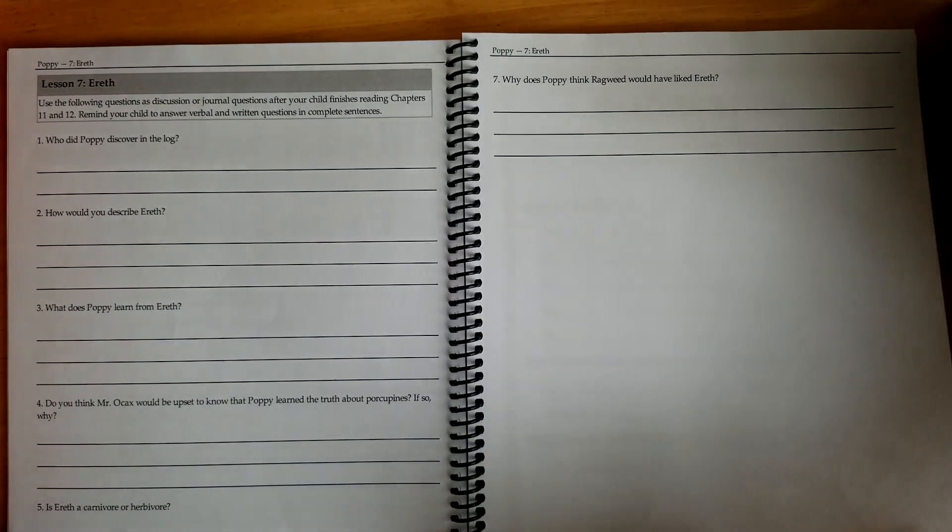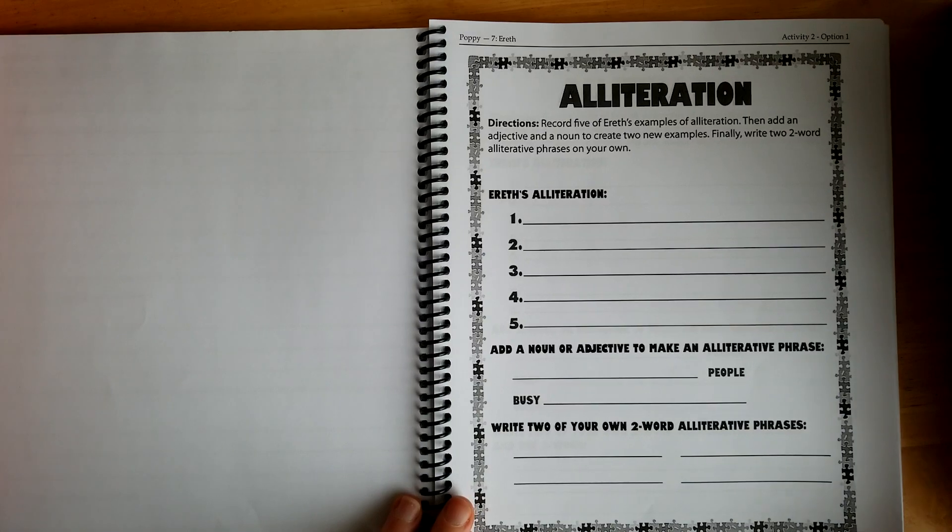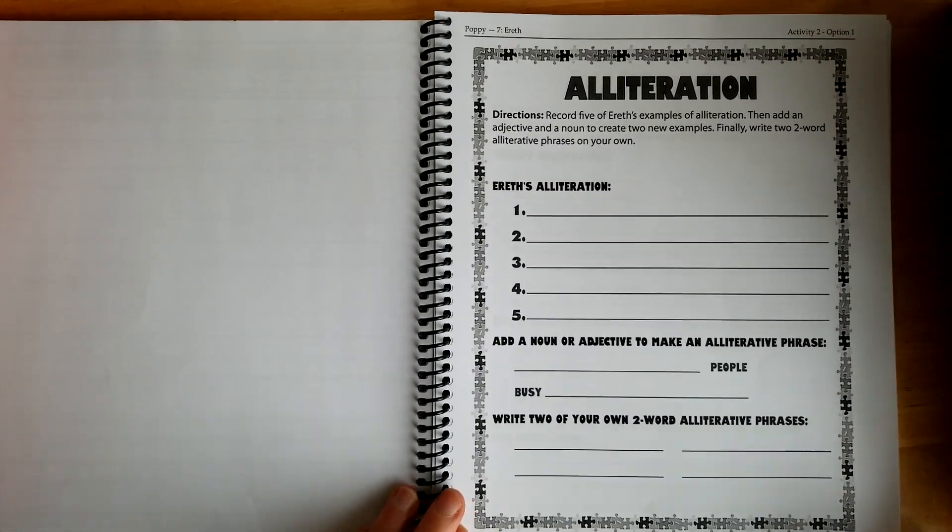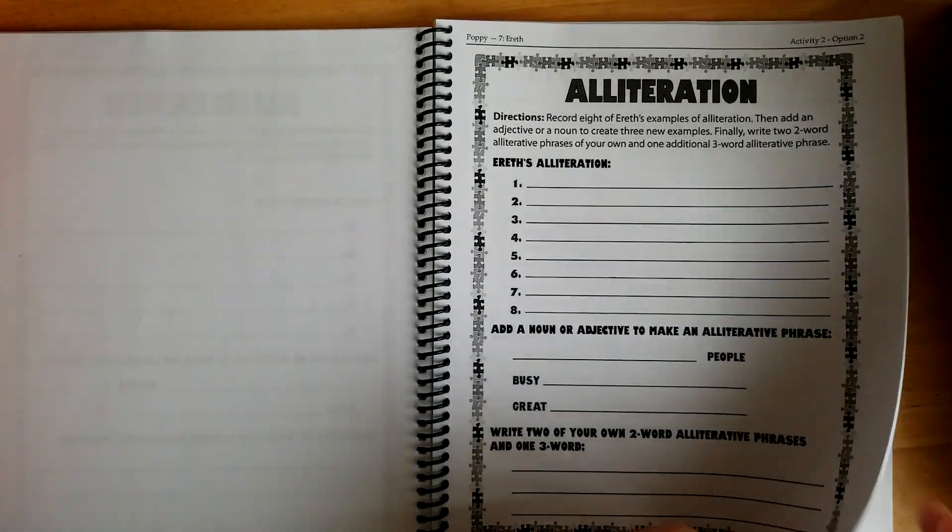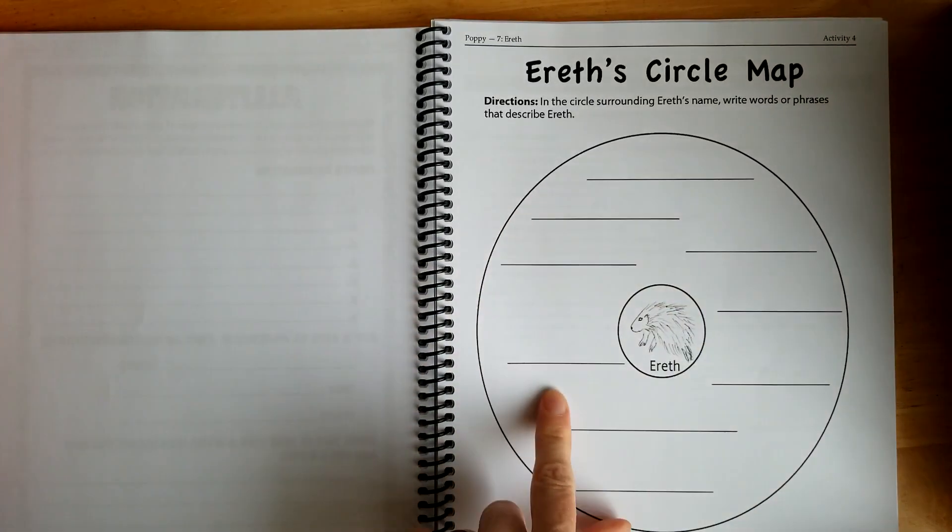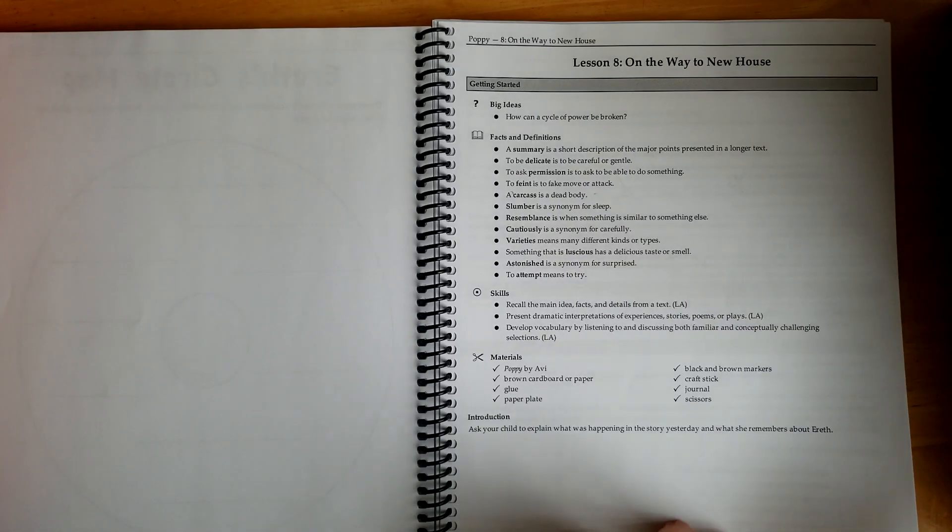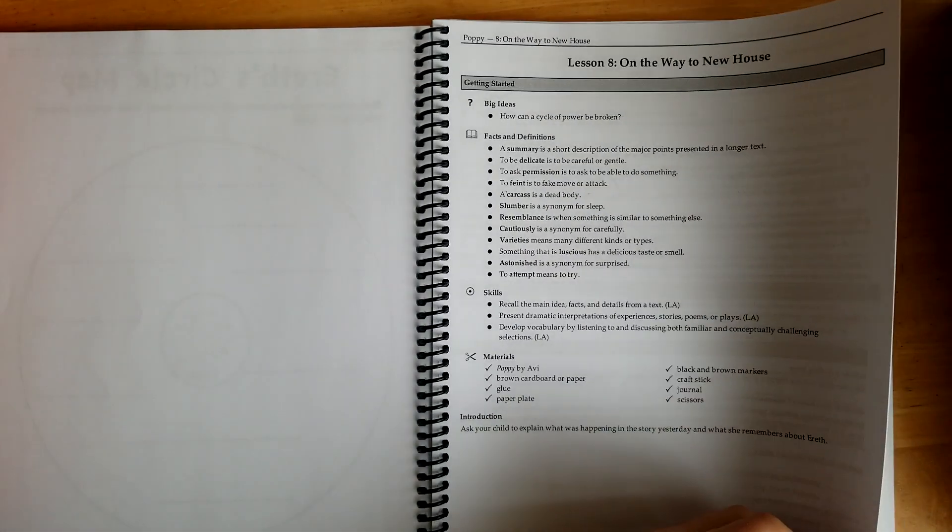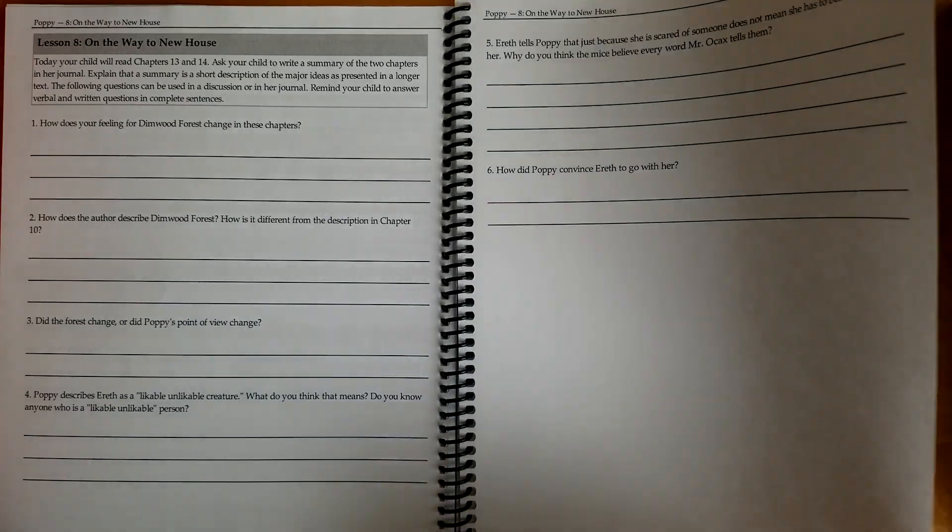More reading comprehension questions. One over alliteration. This was option one. And here's option two, a little bit more challenging. Still both very good. This is adding in descriptions about one of the characters. Descriptive words.